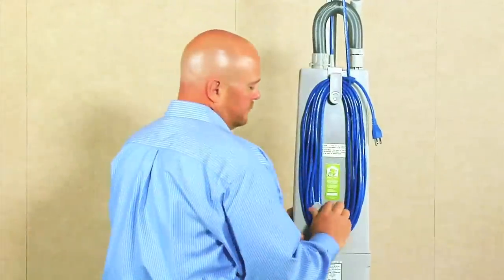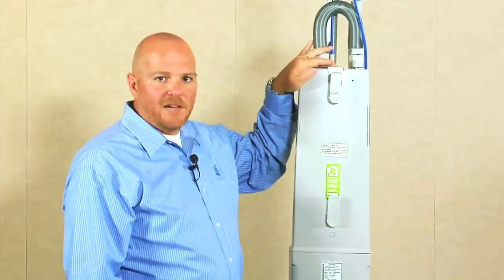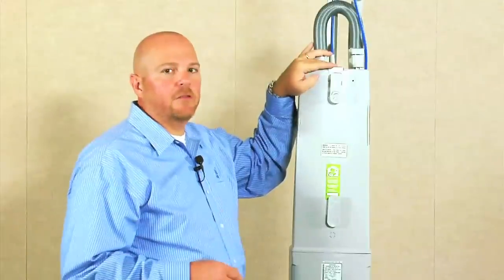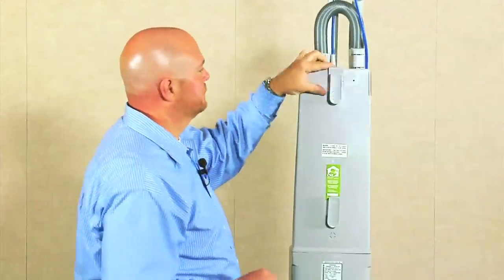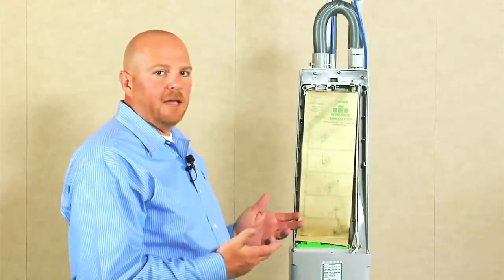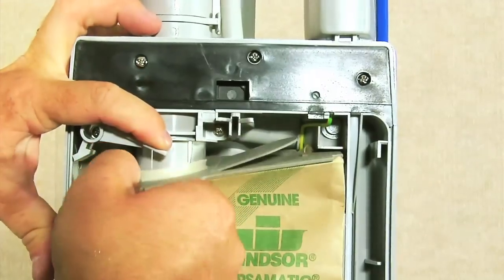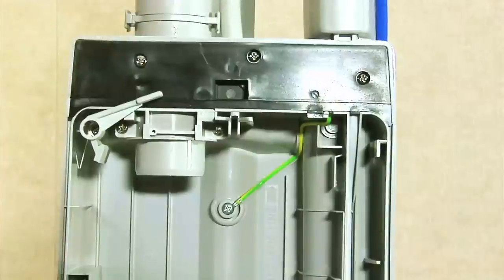To access the vacuum bag and the secondary filter you'll need to remove the cord to gain access to the panel. Release the clip on the top of the back panel to gain access to the vacuum bag and the filter. Once you've removed the panel you can now have complete access to the vacuum bag. To release the vacuum bag depress this switch and the vacuum bag releases.